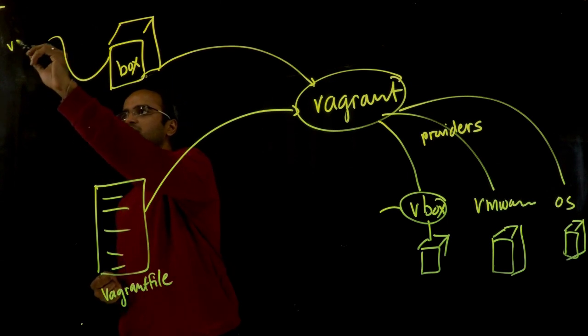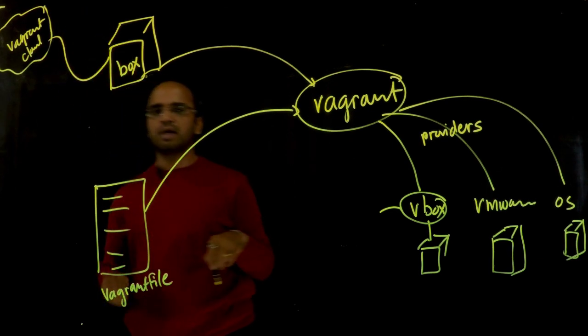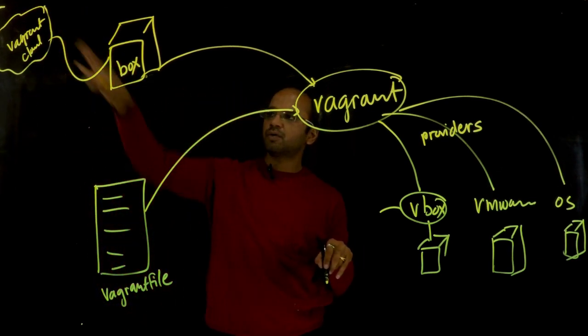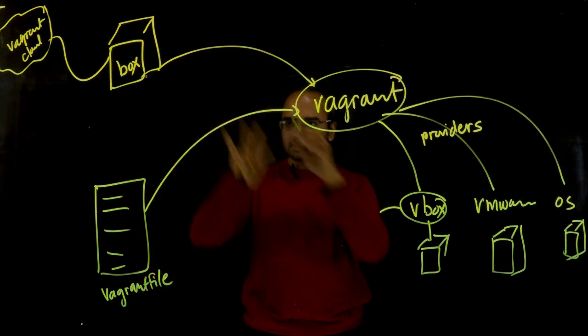The boxes can also be shared. There is something called Vagrant Cloud from where you can download boxes, as well as share your own boxes so that somebody else can use them.